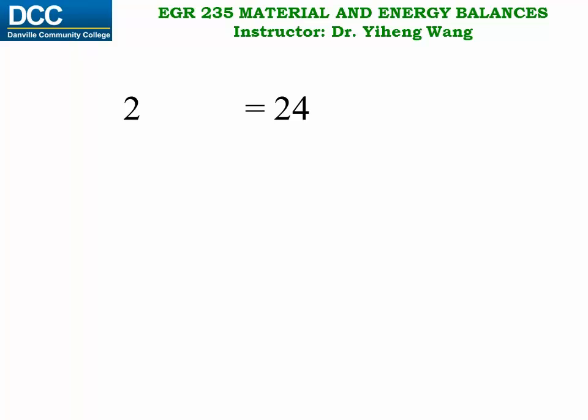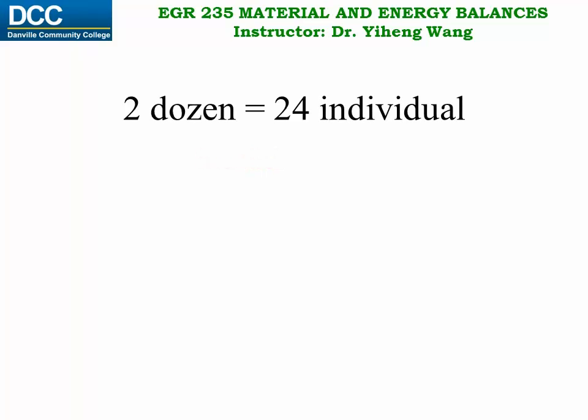When we see an expression like this, we know immediately that it is mathematically invalid — 2 does not equal 24. However, if appropriate units are included, this expression makes perfect sense, since we know that 2 dozen x do equal to 24 x, or 2 dozen people equal to 24 people. This is a simple example of unit conversion,